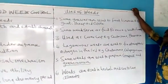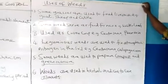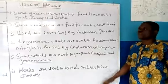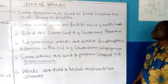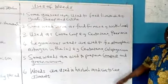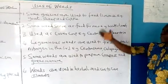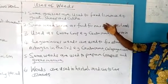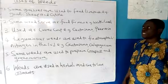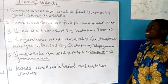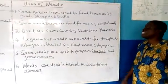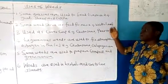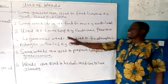Now we come to the uses of weeds. We know weeds are not a friend of the farmer, but they also have some uses. One: some grasses are used to feed farm animals like goats, sheep, and cattle — for example, Centrosema, carpet grass, and Guinea grass are examples of grasses or weeds that are used to feed farm animals. Two: some weeds serve as food for man, e.g. waterleaf. Waterleaf serves as food for man.